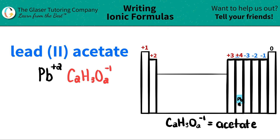Since we have the two charges, all we have to do is crisscross them to say how many of each component I need in my formula. This plus two crisscrosses down, telling me that I need two acetates, and this negative one crisscrosses down, telling me that I need one lead. When you do your crisscrossing, don't worry about the positives and negatives — we're just using these as counting numbers.